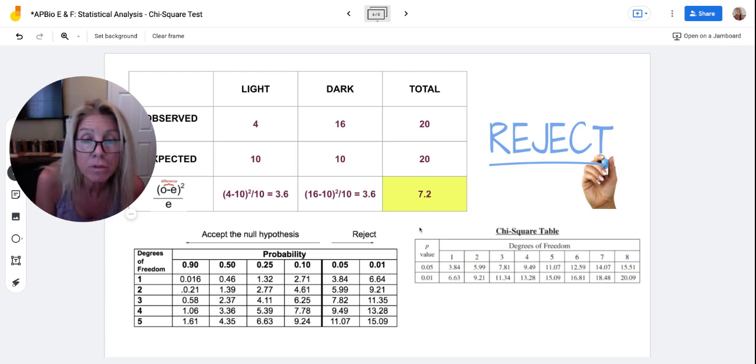Now on the college board chi-square table, this is all they do. Can you figure out what they did different? They just flip-flopped probability with degrees of freedom.